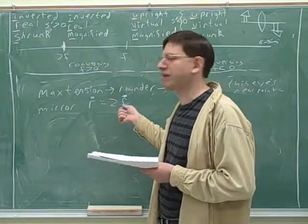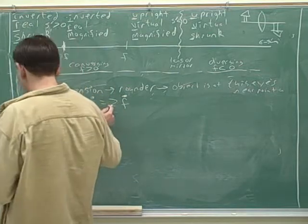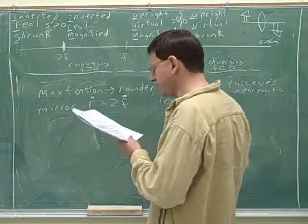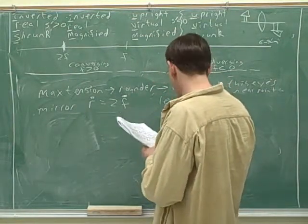So, for a mirror, magnitude of R equals magnitude of 2F. I'm going to put the dots in, because that's for magnitudes. Oh, but for lens, that's not true. So, we need a different equation for lens. Well, here's the equation for the lens.